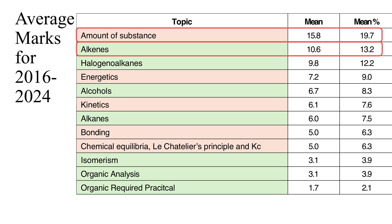Behind that comes Alkenes worth on average 10.6 marks per paper. That's 13% of all the marks that there have been. And Halogenoalkanes is in third position with 9.8 marks per paper, 12.2% of the marks. After that you can see comes Energetics, Alcohols, Kinetics and Alkanes.